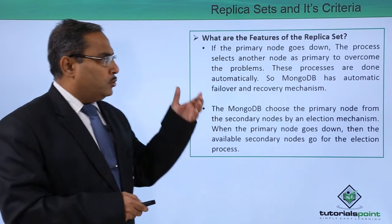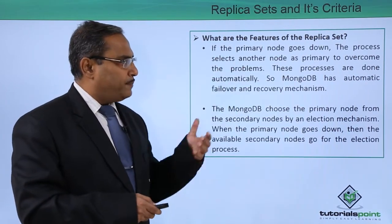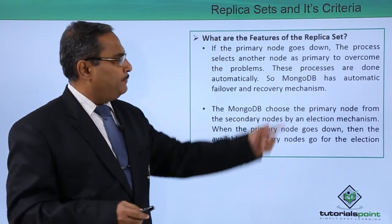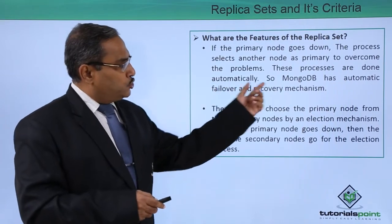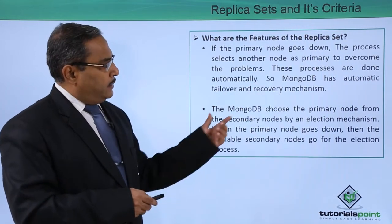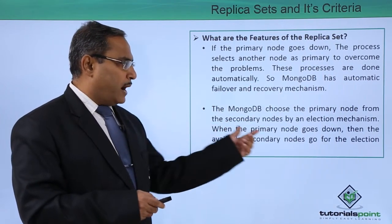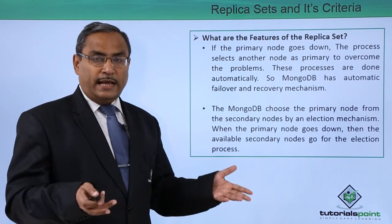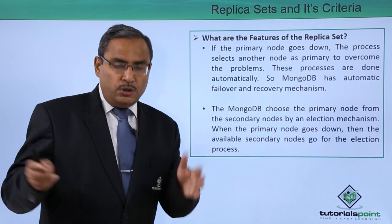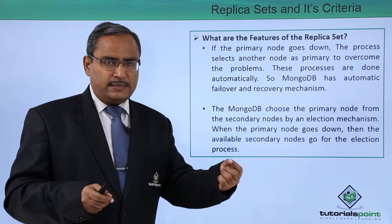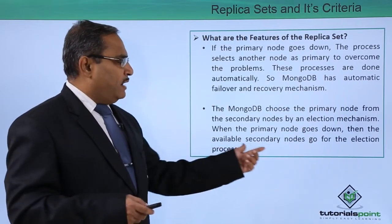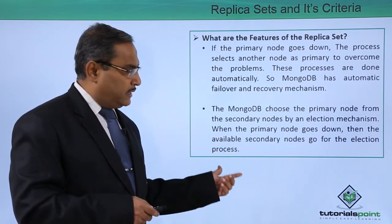If the primary node goes down, the process selects another node as primary to overcome the problem. Out of the remaining secondary nodes, one will be selected as the new primary, and this process is done automatically. MongoDB has an automatic failover and recovery mechanism. MongoDB chooses the primary node from the secondary nodes via an election mechanism — similar to how we elect representatives. When the primary node goes down, the available secondary nodes go through the election process to select a new primary.